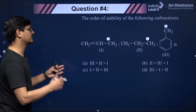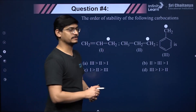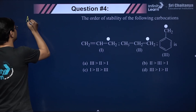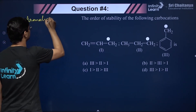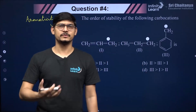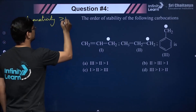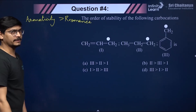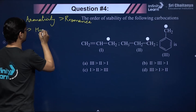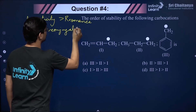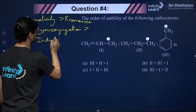For carbocation stability, always remember the order of stabilizing factors: aromaticity is most powerful, then resonance, then hyperconjugation, and lastly the weakest — inductive effect. If a carbocation is stabilized by aromaticity, it is likely the most stable. Next comes the number of resonating structures, then hyperconjugation depending on the number of alpha hydrogen atoms.